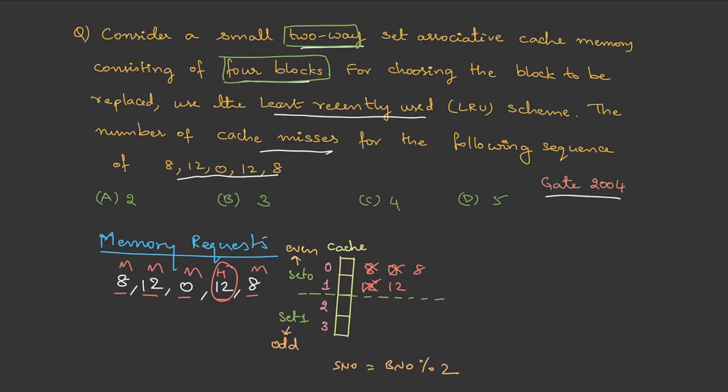Again miss. In the question we are asked to calculate the number of cache misses, so let's count them: one, two, three, four. There are four cache misses. That is option C.